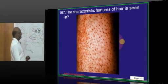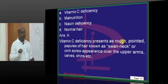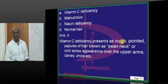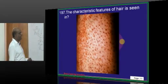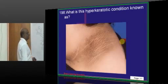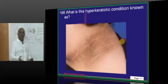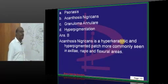Now what do you see characteristically in this hair? Rough pointed papules of hair called swan neck or corkscrew appearance of the hair is a classical feature which you see in vitamin C deficiency. Now what is this hyperkeratotic condition? Classically it is acanthosis nigricans.